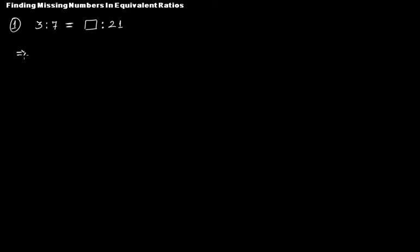So if we write this in the form 3 to 7, that equals this unknown number to 21. Now look at this number and look at this number — 21 is clearly greater than 7. That means if this is the equivalent ratio and this number is greater, then surely we would have to multiply something to 7 so that we can get 21.